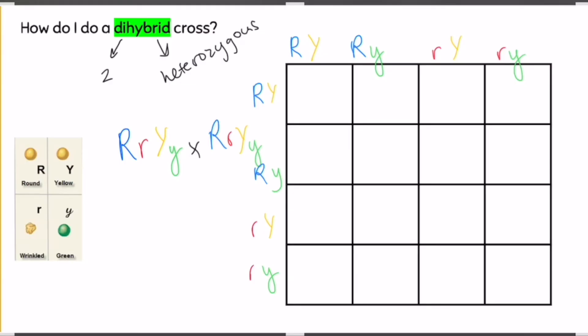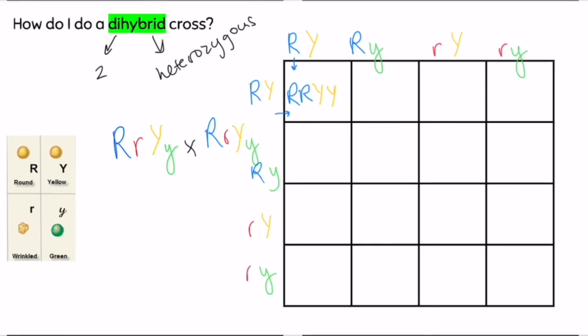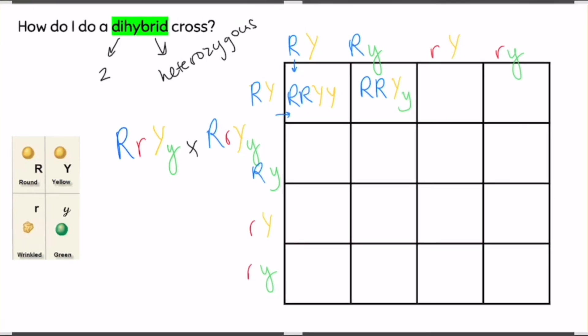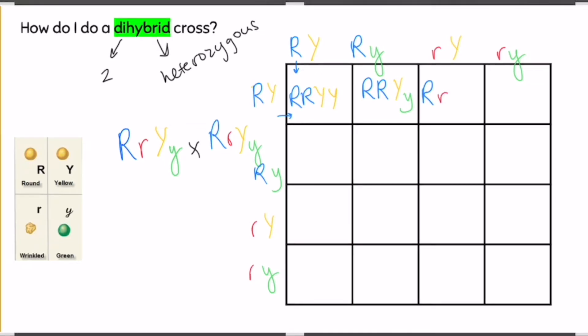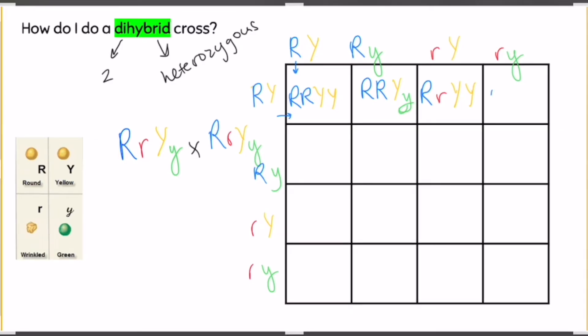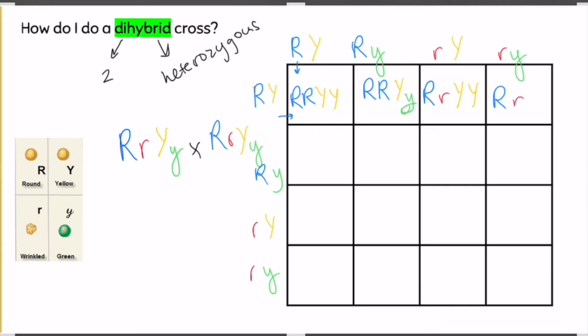So just like a regular Punnett square, you are going to bring in your R from the top, your R from the side. But you're also going to do the y's into the same box. My next square, I'll do the same thing all the way across all the squares. So I have one capital, two capital R's, and then I have one of each y. And you can do this in all one color, but for this video, I'm doing my colors consistently so that you can really track where those traits are coming from in my Punnett square. It's also helping with my telling y's apart. So my top row is done.